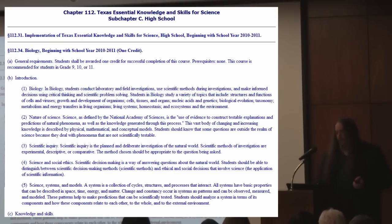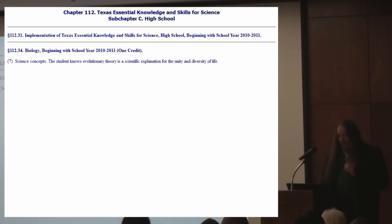Leaving astronomy and geology aside, evolution takes on more focus in what Texas considers essential knowledge and skills in biology. The student knows evolutionary theory is a scientific explanation for the unity and diversity of life. Evolution is the only theory of biodiversity there is or ever was. Intelligent design creationism meets exactly none of the criteria required of a scientific theory — it posits no laws, offers no explanation of any phenomenon, and will not propose any testable hypotheses because it isn't indicated by evidence and isn't falsifiable.